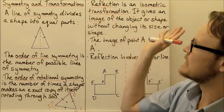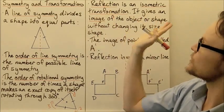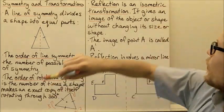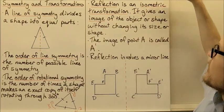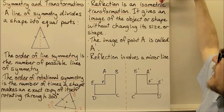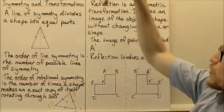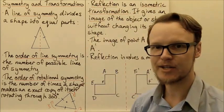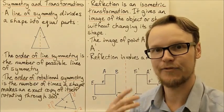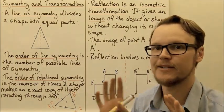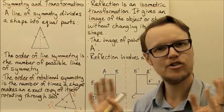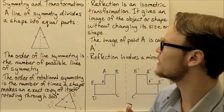Reflection is what is called an isometric transformation. Isometric means we're not actually changing the shape in any way. We're transforming it, moving it, shifting it, flipping it around and doing things with it, but we're not changing the size or shape of it at all.